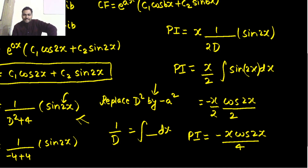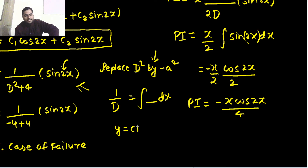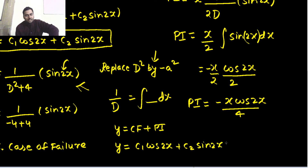So you have your CF and your PI. The final solution is always y equals CF plus PI. So y equals C1 cos 2X plus C2 sin 2X minus x cos 2X divided by 4. This is your final answer.